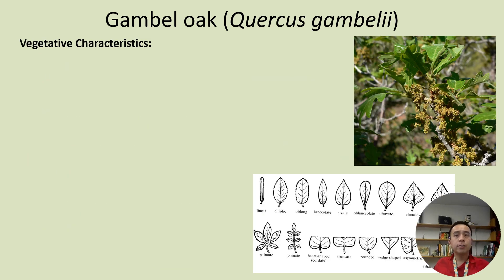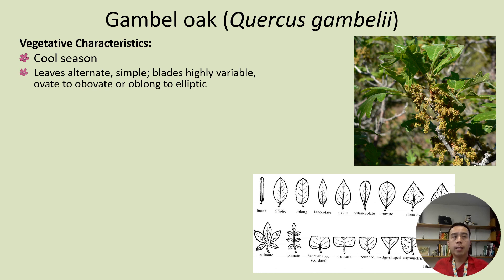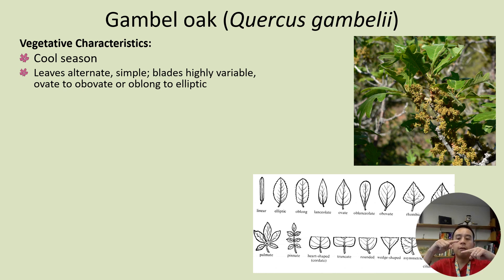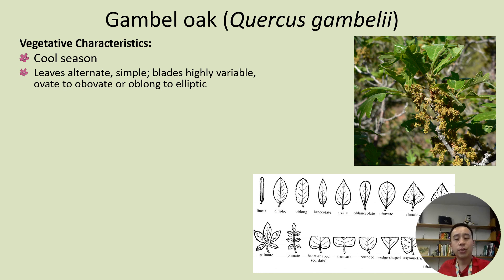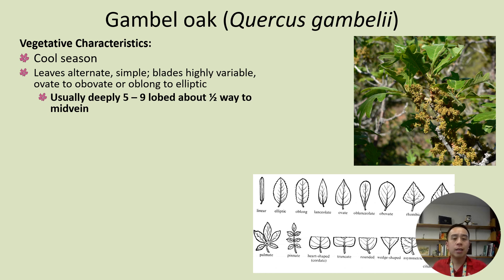In terms of its vegetative characteristics, it's a cool season plant. It has leaves that are alternate and simple — simple meaning it's not a compound leaf, and alternate meaning it occurs on opposite sides of the branch but slightly offset, whereas opposite would be directly opposite from each other. The leaf blades can be highly variable, ranging from ovate to obovate to oblong and elliptic. The leaves are usually deeply lobed, with about five to nine lobes that come out about halfway to the mid-vein.